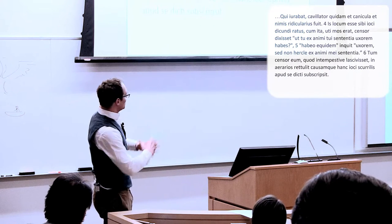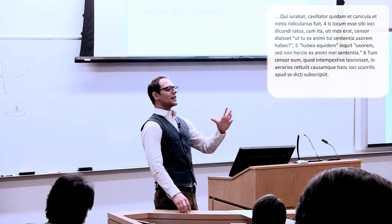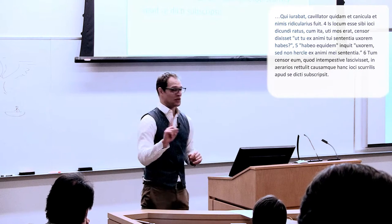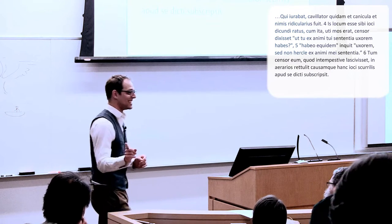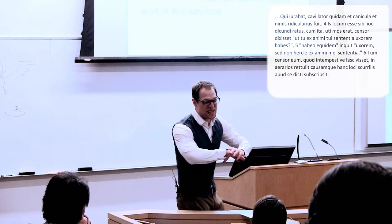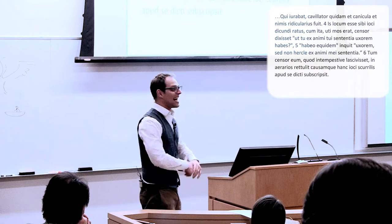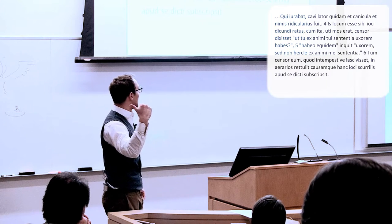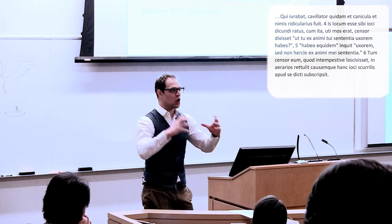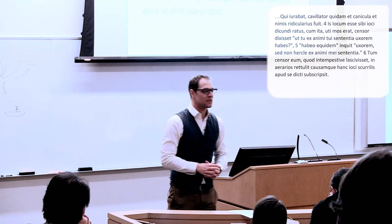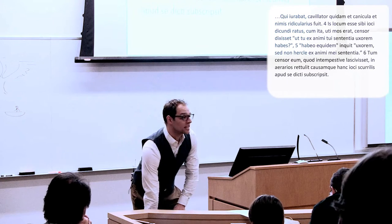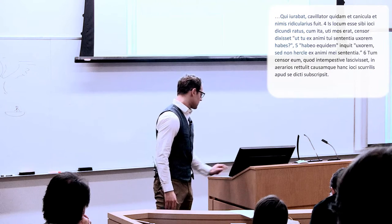Ergo, utimo cum ita utimos erat, censor dixisset: tu ex animi tui sententia uxorem habes? Habeo equidem, inquit, uxorem, sed non hercle ex animi mei sententia. Bene, plus minus non quam cupio. Tum censor eum quod intempestive lascivisset in aerarios retulit causamque hanc iocii scurrilis apud se dicti subscripsit. Itaque propter iocum scurrilem coram censore dictum hic civis factus est non iam eques sed aerarius, infimus civis.